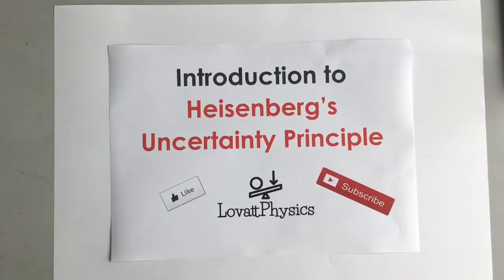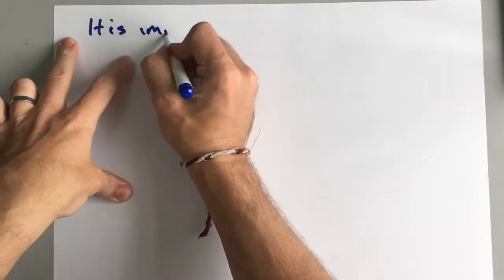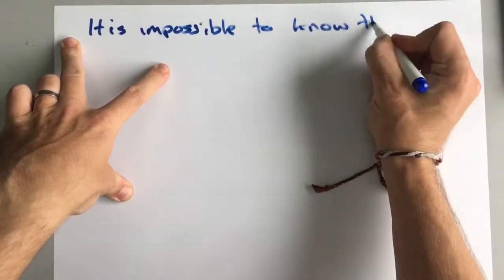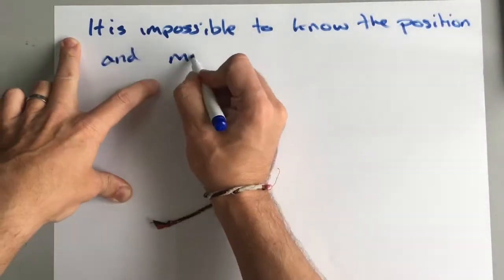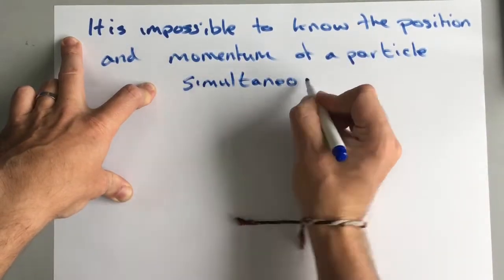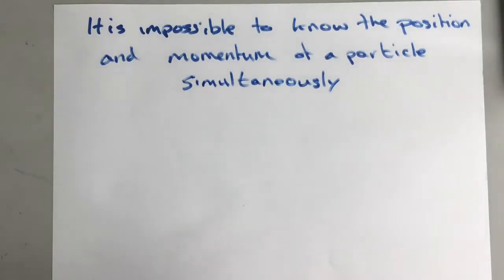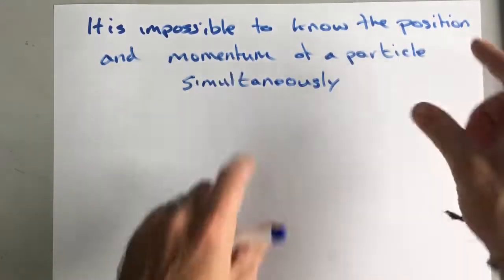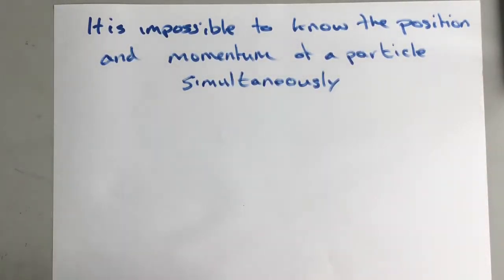This is an IB Physics video for higher level IB students studying Unit 12. It's an introduction to Heisenberg's Uncertainty Principle. Heisenberg's Uncertainty Principle simply states that it is impossible to know the position and momentum of a particle simultaneously. You can't know its position and momentum very precisely, perfectly precisely, at the same time.